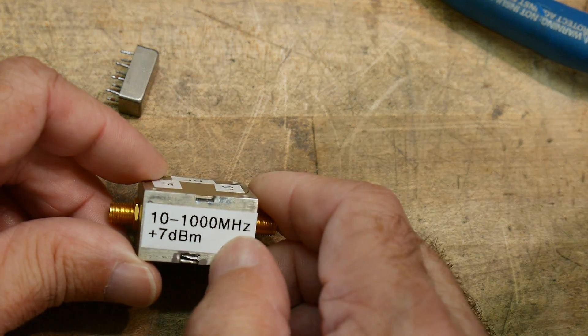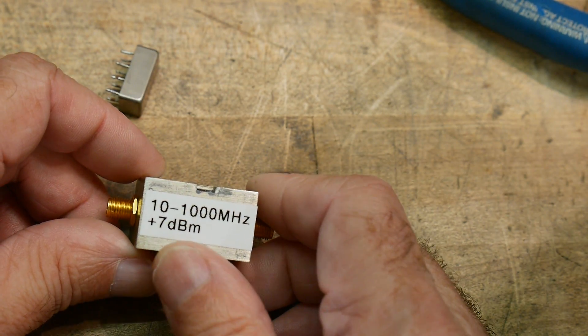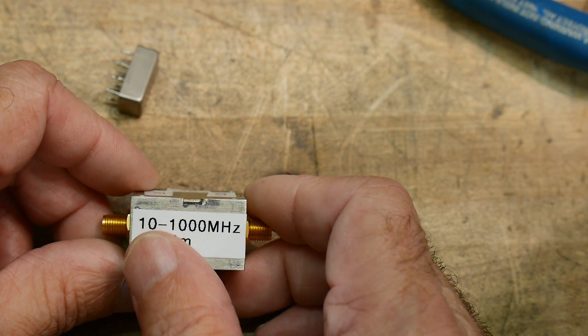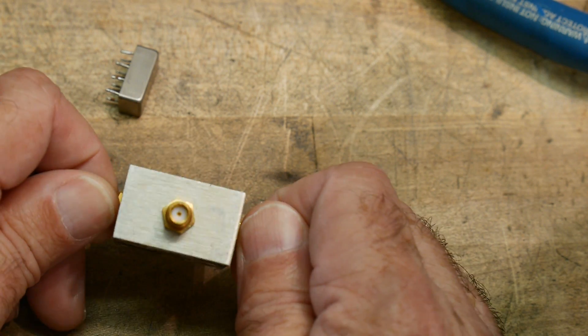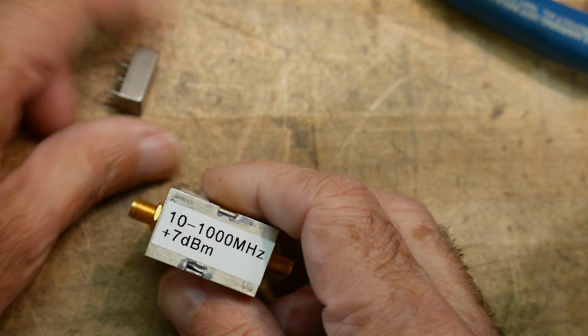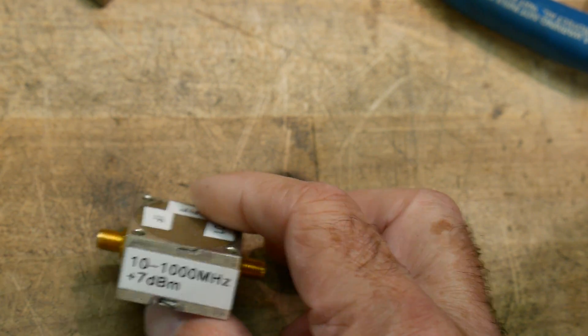The datasheet says it's good from 10 to 1000 MHz. Plus 7 dBm is the optimum power level for the LO. It's always important in these things, I'm not quite sure why, but I know it's important.